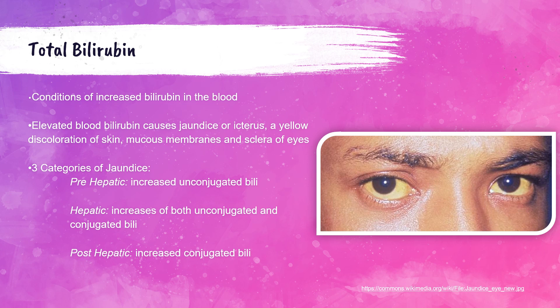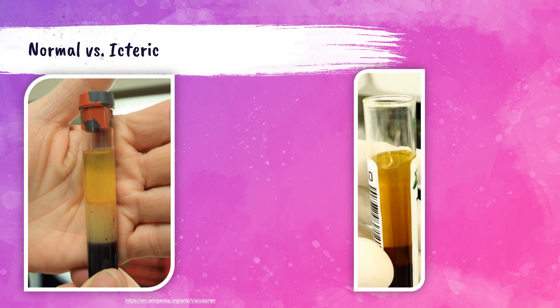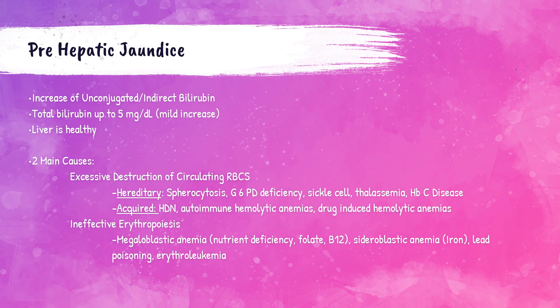There are three categories of jaundice: prehepatic jaundice, hepatic jaundice, and post-hepatic jaundice. The sample in the left-hand photo is a normal patient sample — you can see the serum has a straw-color yellow. The patient on the right is a mild icteric sample, which is a darker yellow color. Some patients with severe jaundice have almost a darkish green tint to their serum or plasma.